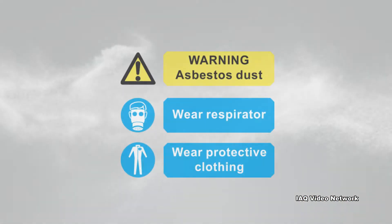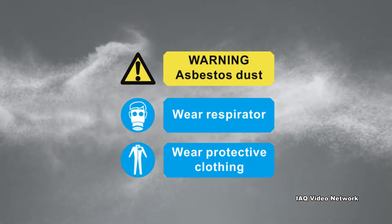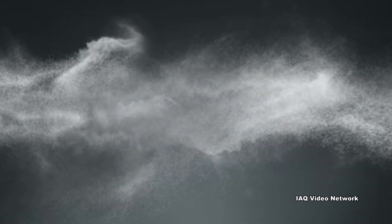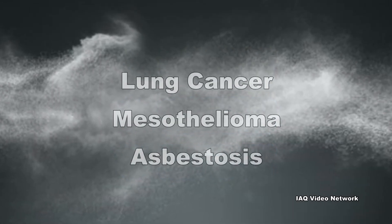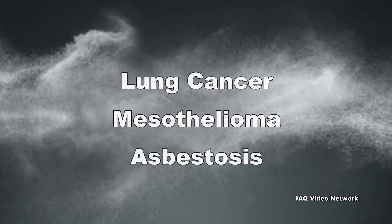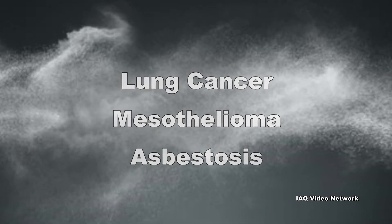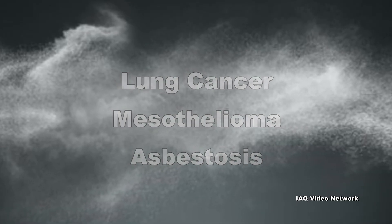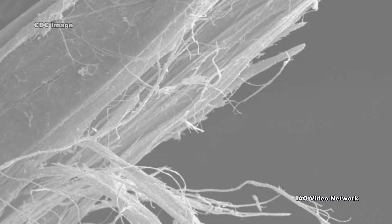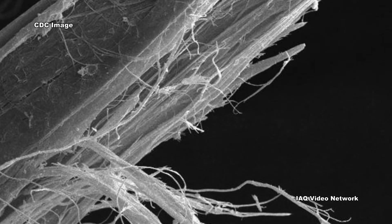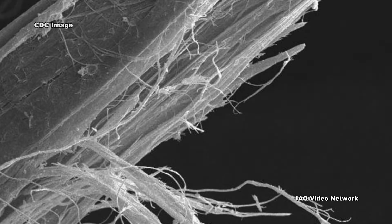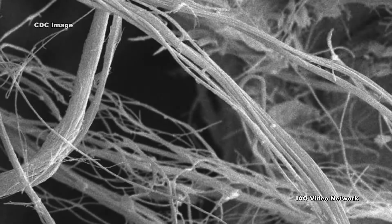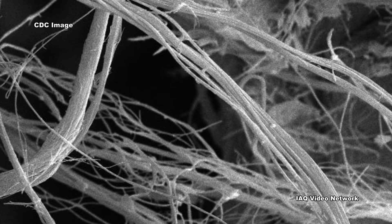Inhalation and ingestion are the primary routes of asbestos exposure. Three of the major health effects associated with exposure include lung cancer, mesothelioma, and asbestosis. To protect the general public and workers from exposure to asbestos, there are standards for asbestos in drinking water, schools, some consumer products, and occupational exposures.